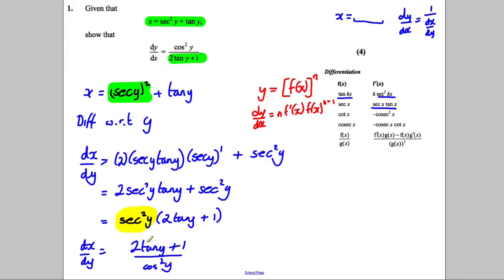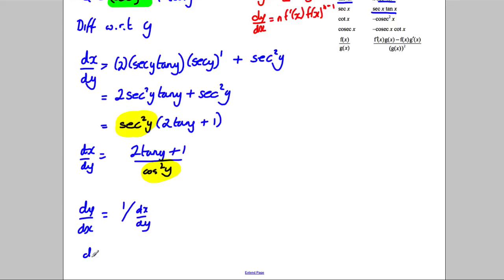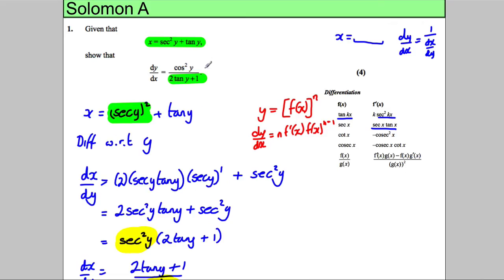I can put that on the bottom here, and then dy by dx is therefore one divided by dx by dy. So dy by dx would therefore be the reciprocal of this which flips it: cos squared y divided by two tan y plus one. And looking up our question, that's exactly what we've been asked to prove for four marks.